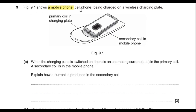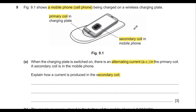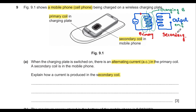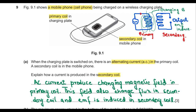Question 9 says figure 9.1 shows a mobile phone being charged on a wireless charging plate. The plate has a primary coil and the mobile has a secondary coil. When the charging plate is switched on, an alternating current flows in the primary coil. Explain how current is produced in the secondary coil. This works on the principle of a transformer: alternating current in the primary coil produces a changing magnetic field, which creates a changing flux in the secondary coil, inducing an EMF.